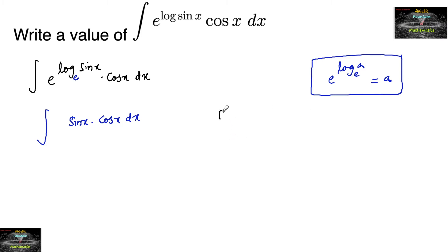Now let's use the substitution method. Put sin x equals t, so on differentiating we'll have cos x dx equals dt.